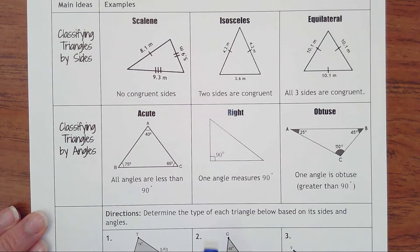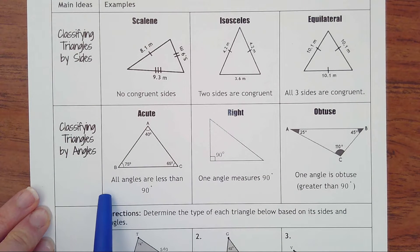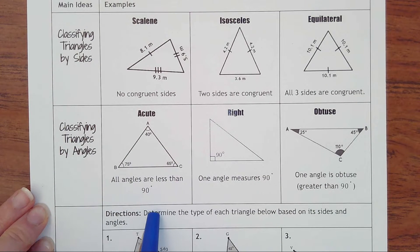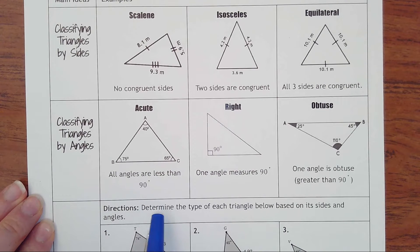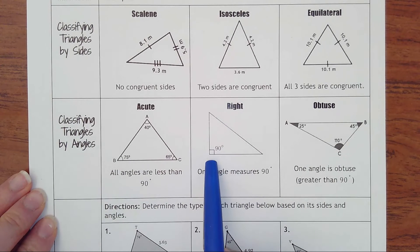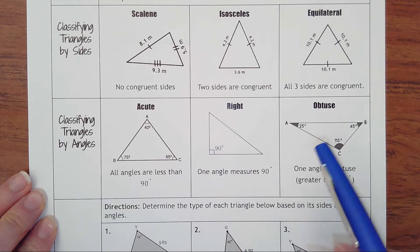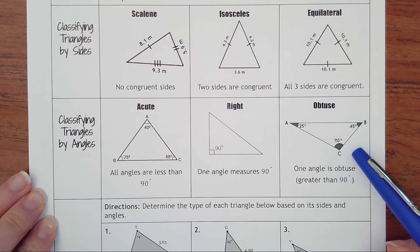Then by angles, we have an acute triangle. All three of the angles will be less than 90 degrees. And then in a right triangle, you'll just have the one right angle. And then an obtuse, you'll have one obtuse angle, which means greater than 90 degrees.